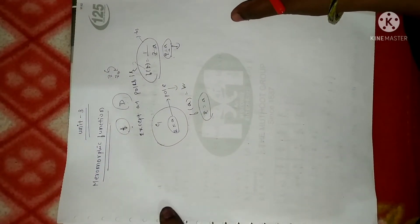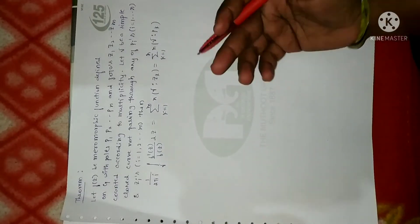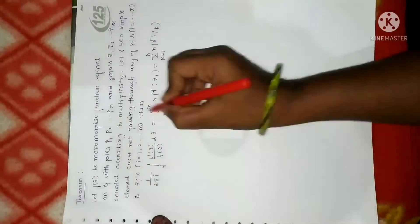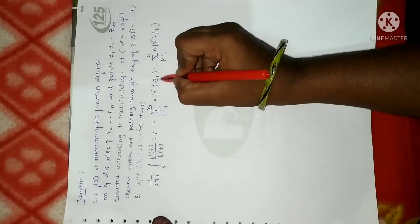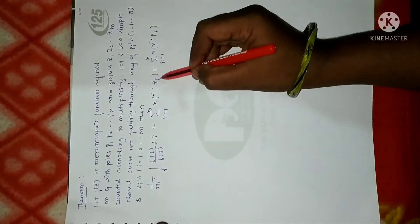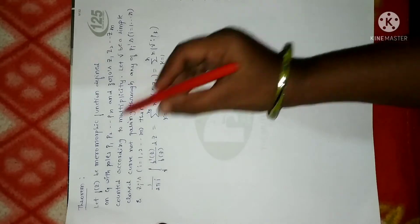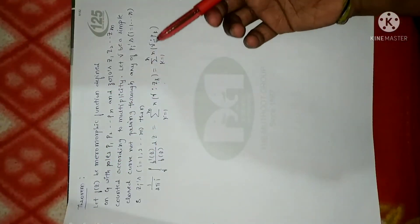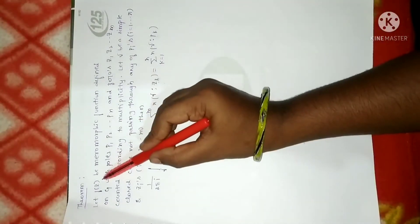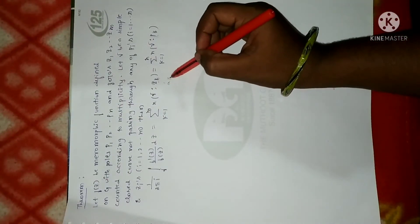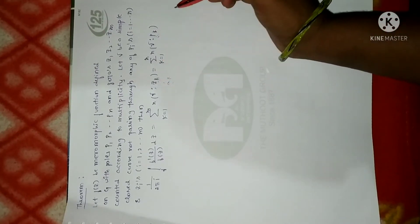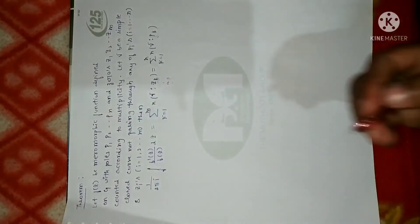Now we have a theorem based on this meromorphic function. It looks similar to the theorem based on the winding number of zeros of analytic functions from Unit 2, but the difference is that here zₖ denotes zeros of multiplicity k and pₖ denotes poles. The function f(z) is meromorphic, whereas in the previous theorem f(z) was analytic with only zeros aₖ of multiplicity k.